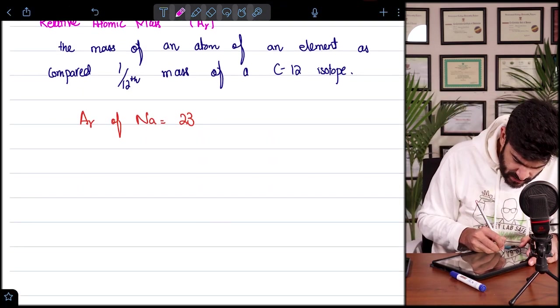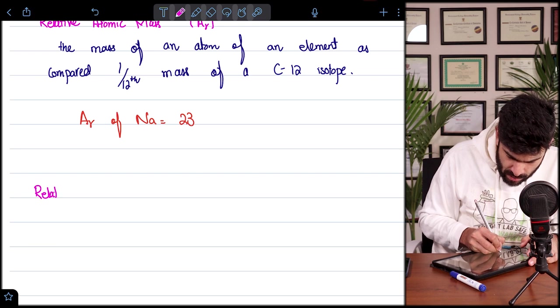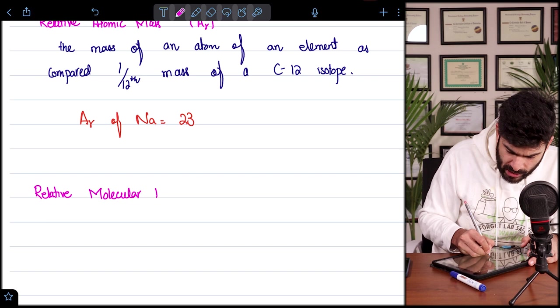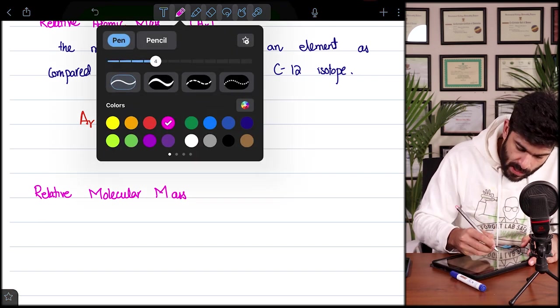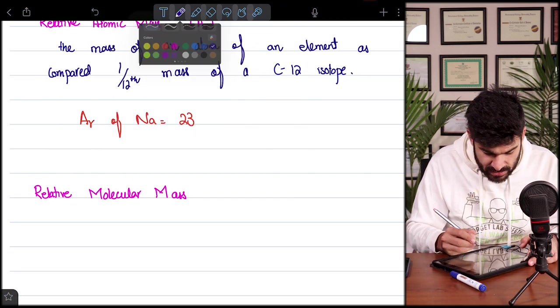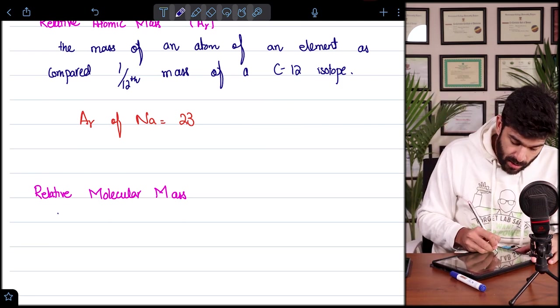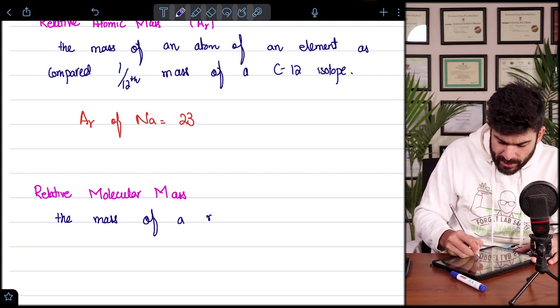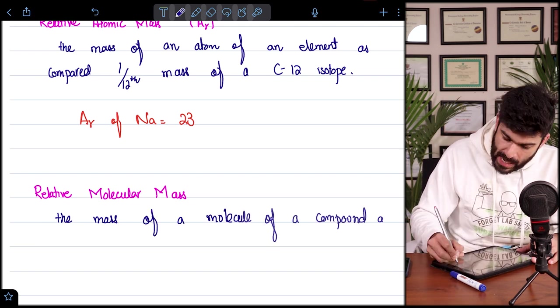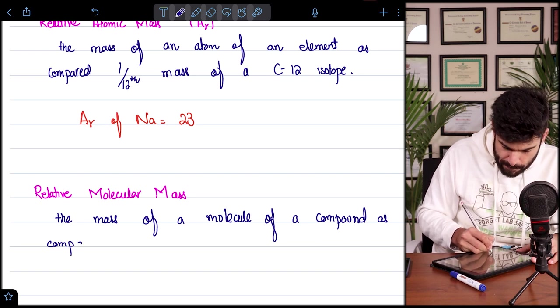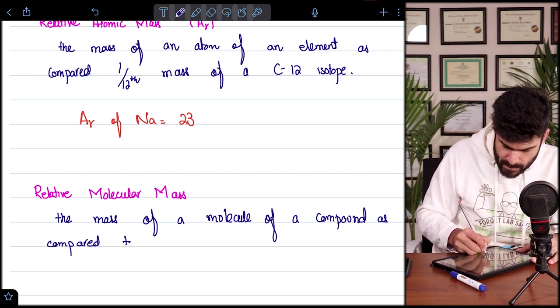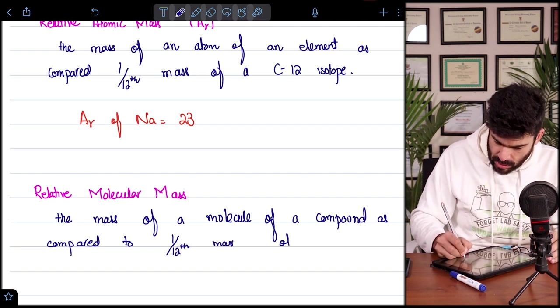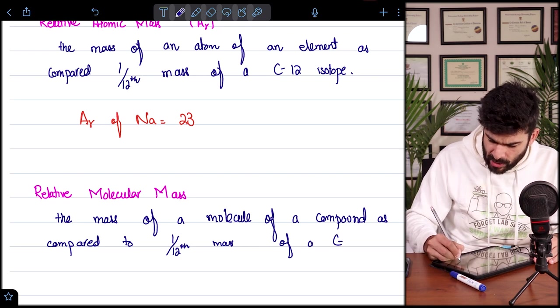And likewise, the other concept is relative molecular mass. Now we have the same concept here with us. What is the relative molecular mass? The mass of a molecule of a compound as compared to one twelfth mass of a carbon 12 isotope.